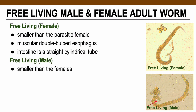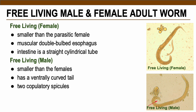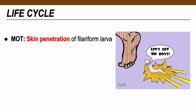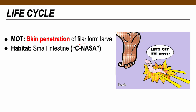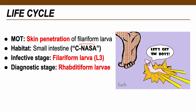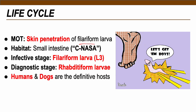The mode of transmission of Strongyloides is skin penetration by the infective stage filariform larva — very similar to hookworm mode of transmission. Adults reside in the small intestine; the infective stage is filariform larva; diagnostic stage is eggs and rhabditiform larva. Humans and dogs act as definitive hosts with no intermediate host — both harbor the larval and adult forms of the parasite.